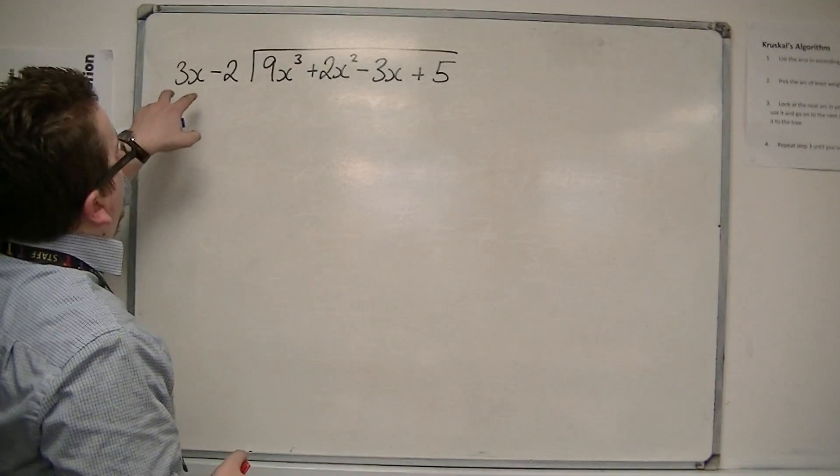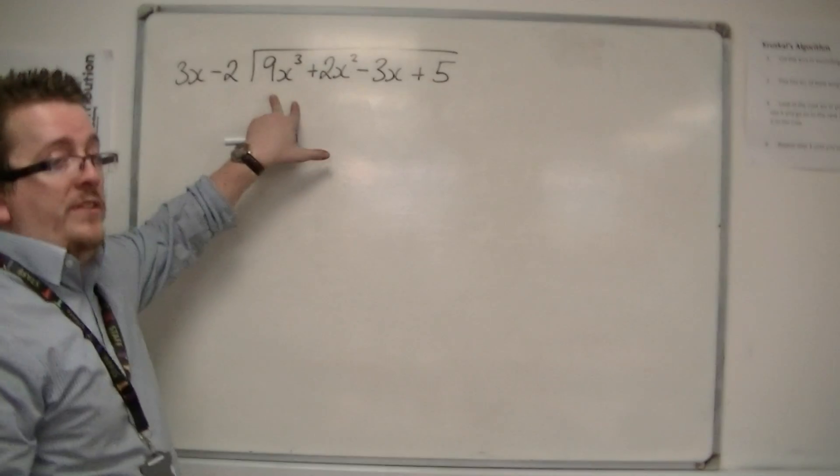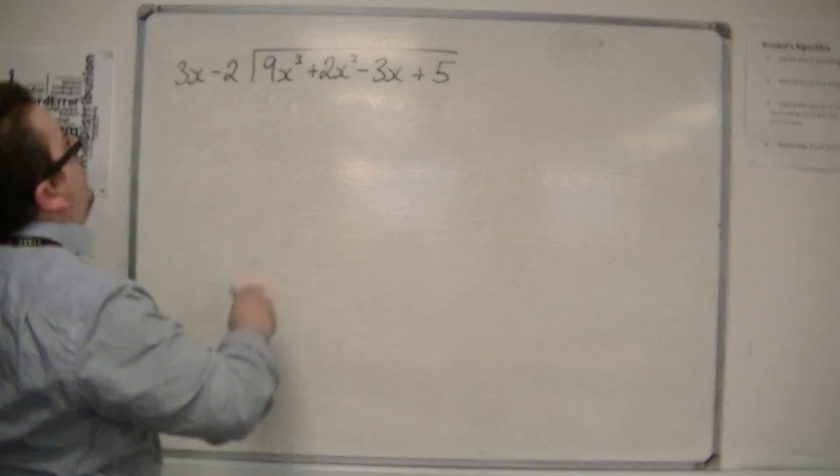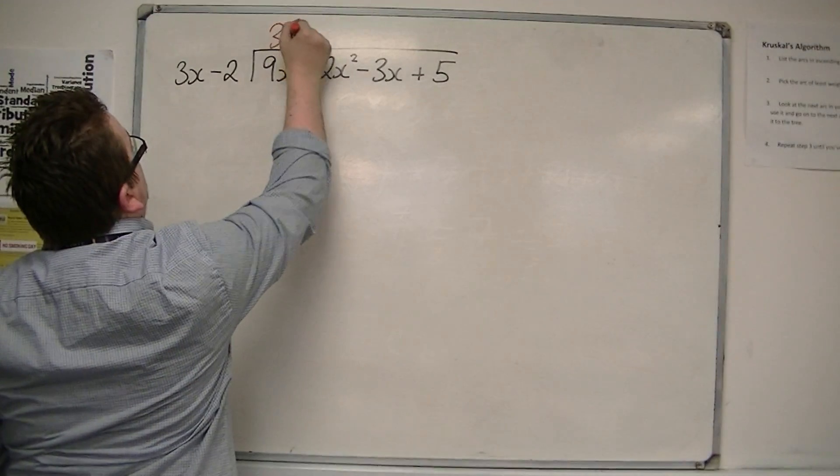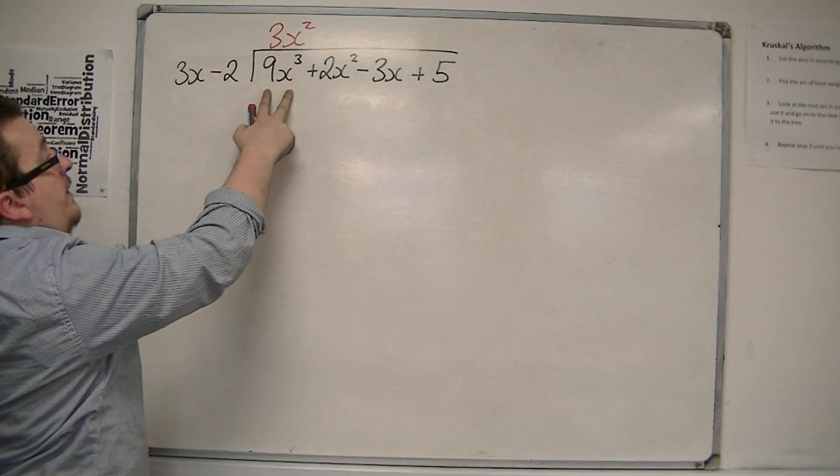So, first of all, we look at how many 3x's go into 9x cubed. Well, that would be 3x squared, because 3x squared times 3x is 9x cubed.